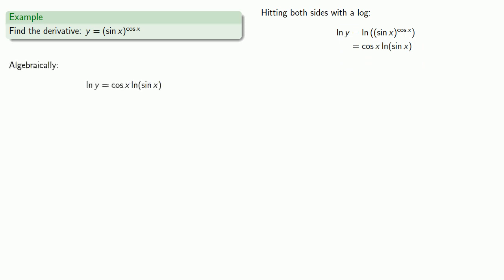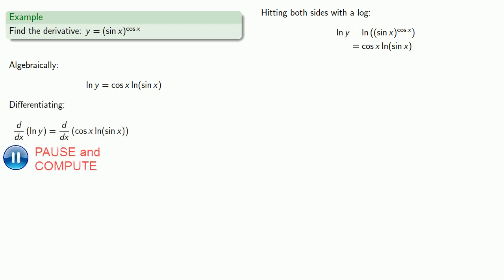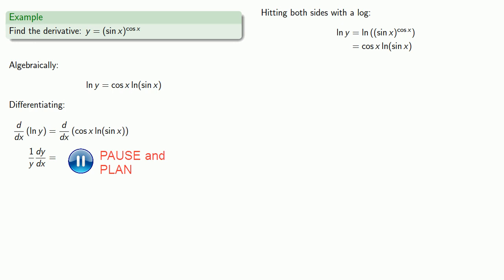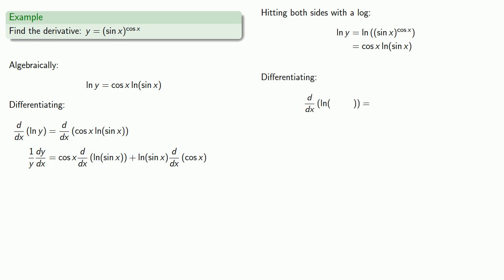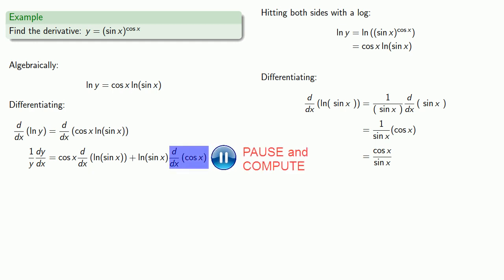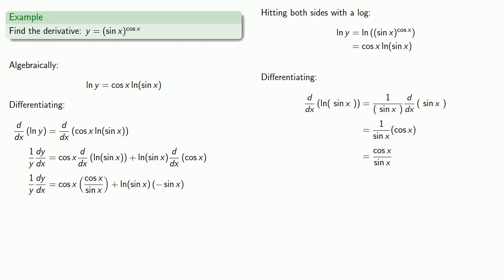Then we'll use implicit differentiation. On the left-hand side, we have log something, so the derivative will be 1 over sin x cos x. On the right-hand side, we have the derivative of a product, which means we need to use the product rule. We need the derivative of log sin x — this function is a log something, so our derivative will be 1 over sin x cos x. We also need the derivative of cos x. Finally, we want to find dy/dx, so we'll multiply both sides by y and get our final derivative expression.